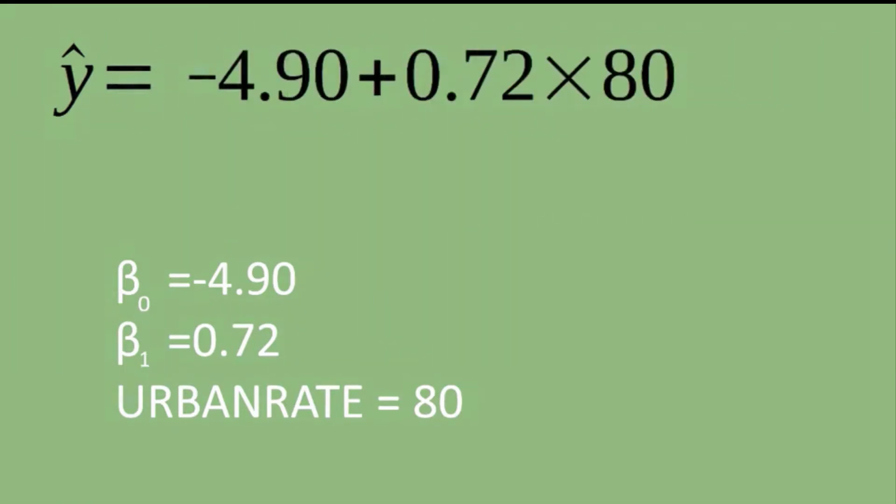We just plug the value 80 into our equation where we have our x value. As you can see, in a country with 80% urbanization, we would expect 52.7 people out of every 100 to use the internet.